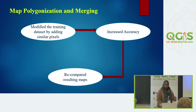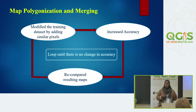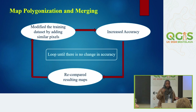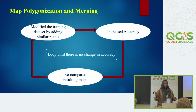Every iteration gave me increased accuracy because I increased my training sample dataset. I continued until the last loop when there was no change in accuracy anymore — that's when I knew I had reached the optimum accuracy from my machine learning process. It worked: the first map had a confusion matrix accuracy of 70%, and the final one ended up at 85%.